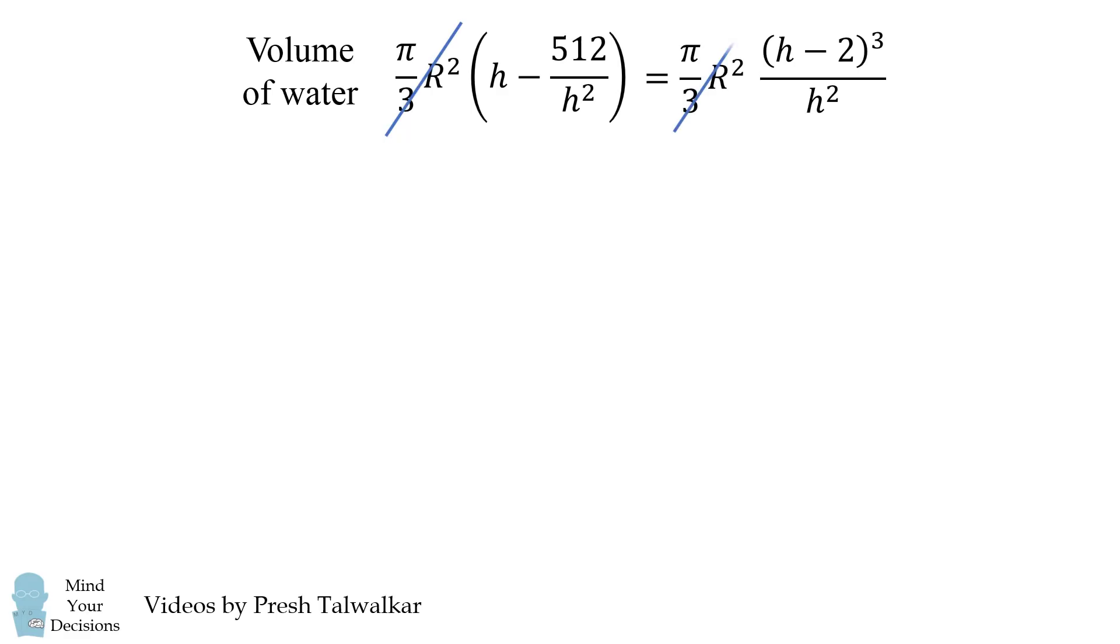So we set these two equations equal to each other and now we have a miraculous cancellation. Notice that pi over 3 times r squared cancels out in both equations. The answer is independent of r and the length of the radius of the large cone cancels out. So we now want to solve for the value of h.